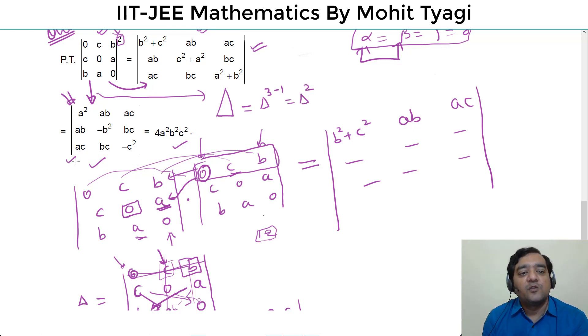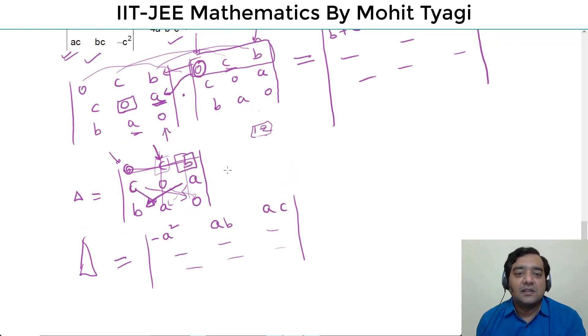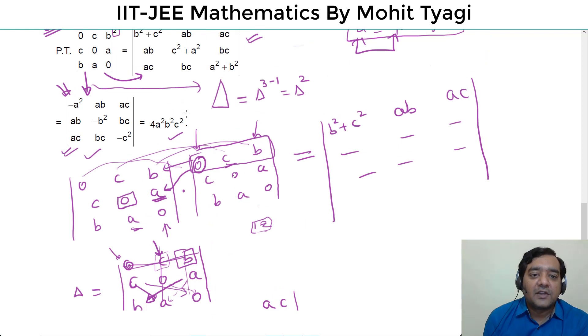So delta equals this. The rest of the values you can match yourself. You can calculate yourself and see it is matching. Now the third thing is 4a square b square c square, this is the value.